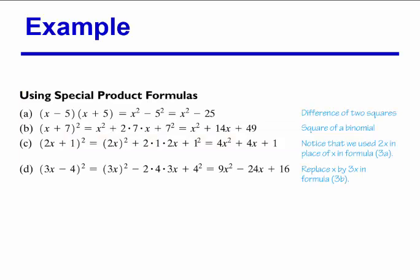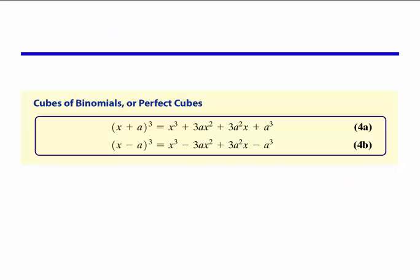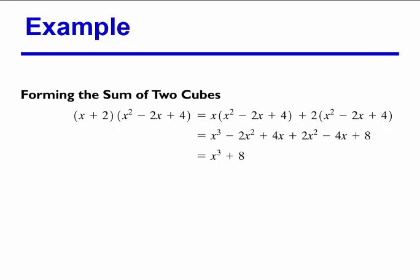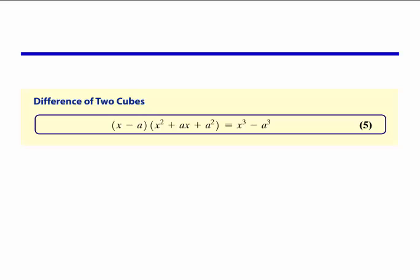We also have a special product formula. Then we have cubes of binomials, or perfect cubes: x plus 3 to the third, and x minus 3 to the third, using the special formulas. We also form the difference of two cubes — x minus 1 times x squared plus x plus 1 gives x cubed minus 1. And the sum of two cubes — x plus 2 times x squared minus 2x plus 4 gives x cubed plus 8. When multiplying a binomial times a polynomial, the distributive property method is easiest.